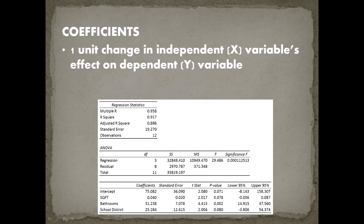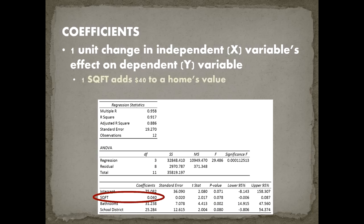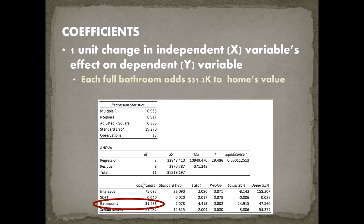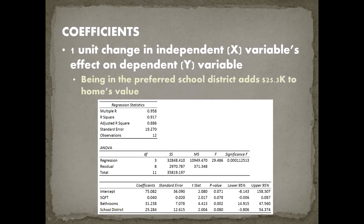Coefficients tell us what a one-unit change in an independent variable's effect will be on the dependent variable. They're in the bottom table on the left. The intercept says the average starting price of a house is $75,100. Square footage: one additional square foot adds $40 to home value, so 100 square feet adds $4,000. Each full bathroom adds $31,200 to home value — one fewer bathroom reduces value by $31,200. Being in the preferred school district adds $25,300 to a home's value.